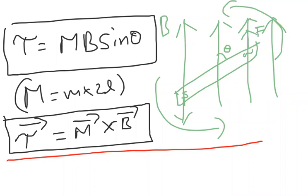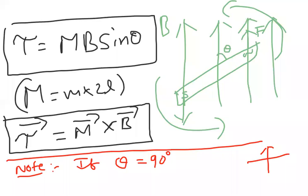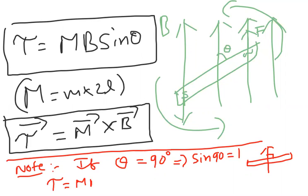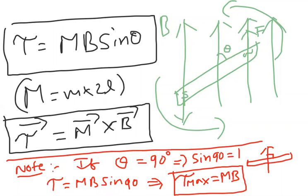Now, one important note: if theta equals 90 degrees, meaning the field and magnet are perpendicular, then sin 90 equals 1, so tau equals MB times 1 equals MB. This is the maximum torque. So maximum torque formula is MB, and it acts when the field and magnet are perpendicular to each other.